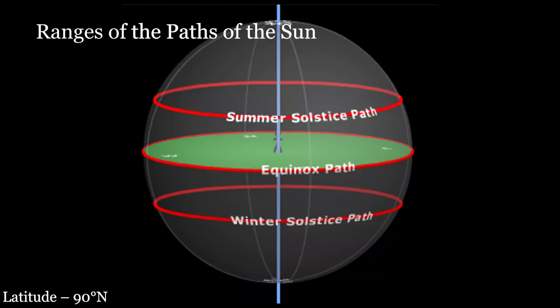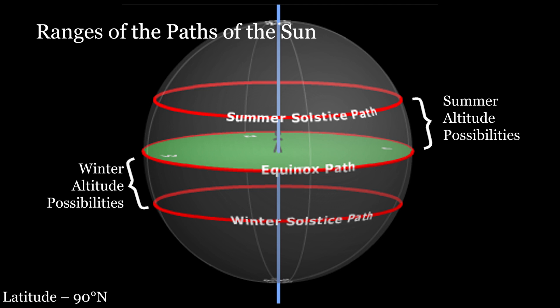So for an observer at the North Pole, the Sun does not set for the six months between the vernal and autumnal equinoxes — observers experience the midnight Sun. And the Sun does not rise for the six months between the autumnal and vernal equinoxes — observers experience the polar night.